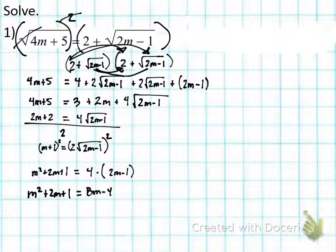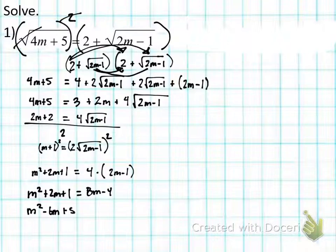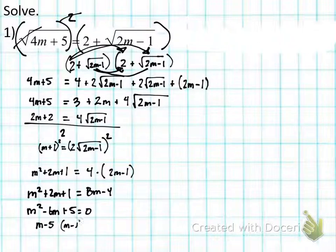I get m² − 6m + 5 = 0. Factoring — I can do that in my head: (m − 5)(m − 1) = 0. Therefore m = 5 and m = 1 are my solutions.